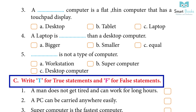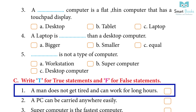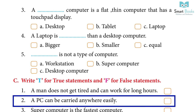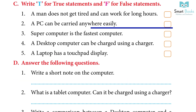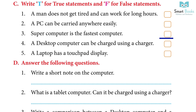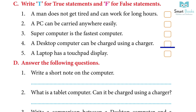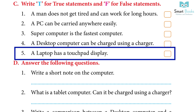Activity C: write T for true statements and F for false. 1. A man does not get tired and can work for long hours — Answer: False. 2. A PC can be carried anywhere easily — Answer: False. 3. A supercomputer is the fastest computer — Answer: True. 4. A desktop computer can be charged using a charger — Answer: False. 5. A laptop has a touchpad display — Answer: False.